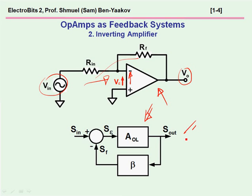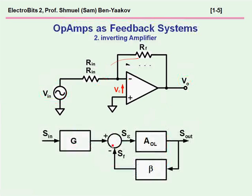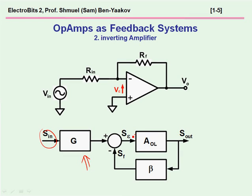In the case of the feedback model, if there is no feedback, S-sub-f is zero, then all the signal is fed to the input of the amplifier. So something is missing here, and we can correct this by adding an extra block — which I call the g-block — which will take into account the relationship between the input and the signal fed to the input terminals of the amplifier when there is no feedback.